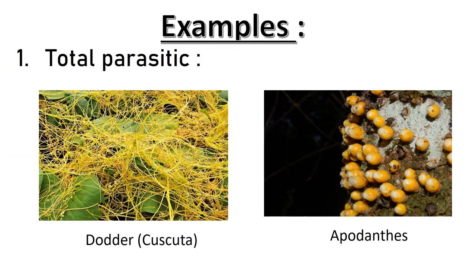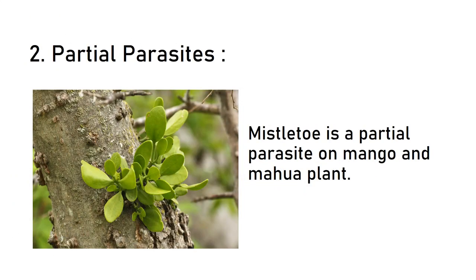Let us have a few examples of parasitic plants. The first category is total parasitic. Examples: Dodder (Cuscuta) or Orobanche. Example of partial parasites: Mistletoe is a partial parasite on mango and mahua plants.